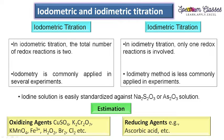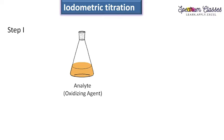Iodometric titrations are commonly applied to several experiments, whereas iodimetric titrations are limited. In both, iodine solution is easily standardized by sodium thiosulfate or arsenic oxide. Here are a few examples of oxidizing agents that can be determined by iodometric titration and reducing agents that can be determined by iodimetric titration. Now coming to the animation part, and after this animation I will give you the lab activity. In iodometric titrations, the analyte is an oxidizing agent.